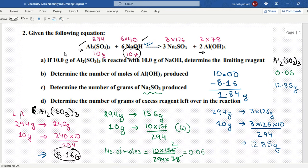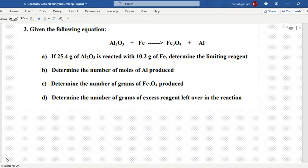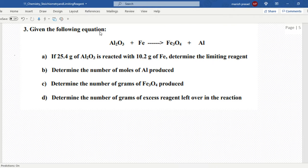Now the first thing that we should take out is the molar mass. Please give me the molar mass of aluminum oxide. 102. Iron? 56. Then iron oxide? 232. And aluminum? 27.